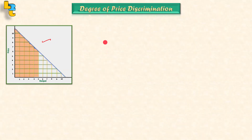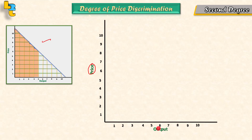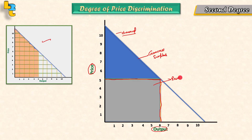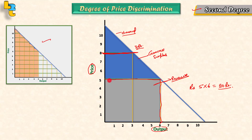Now let's talk about second degree price discrimination. On the Y-axis is price and the X-axis is output. This is our demand curve. Our seller sells 6 units at 5 rupees, giving 30 rupees revenue. In second degree price discrimination, our producer or seller will make different bundles — for example, charging 8 rupees for the first 2 units and 5 rupees for the next 3 units.